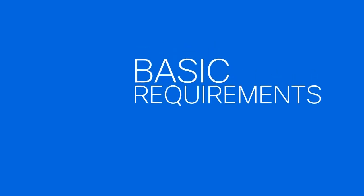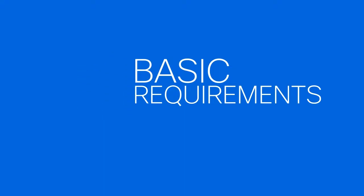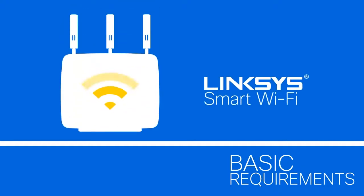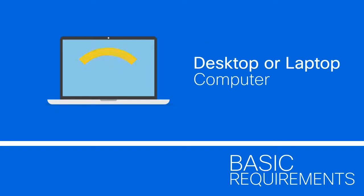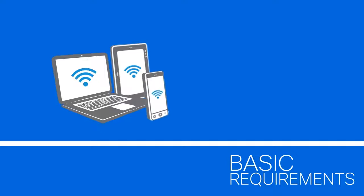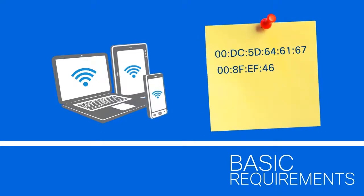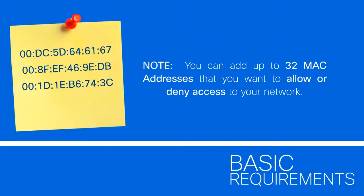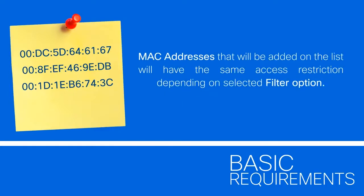Before we begin, make sure you have the following. First, your Linksys Smart Wi-Fi router must be already set up. Second, a desktop or laptop computer that's connected to your network. Lastly, note the MAC address of the device or devices to which you want to provide or deny access. You can add up to 32 MAC addresses you want to allow or deny access to your network. All MAC addresses added on the list will have the same access restriction depending on what filter option you have selected.